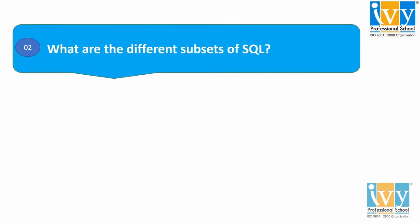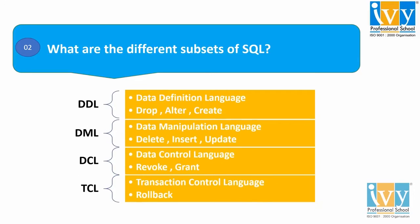Moving to the second question: what are the different subsets of SQL? The various subsets of SQL are: number one, DDL — it stands for Data Definition Language. It allows us to perform various operations on the database such as CREATE, DROP, ALTER, etc.